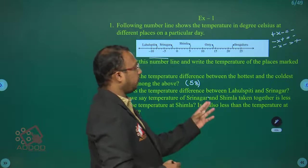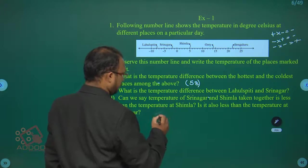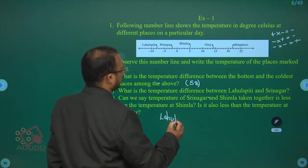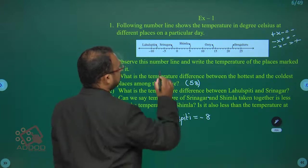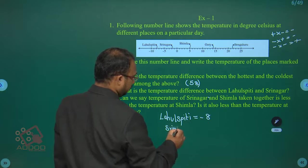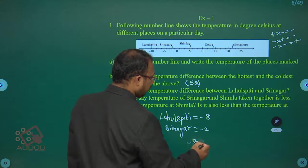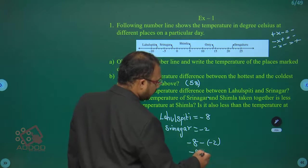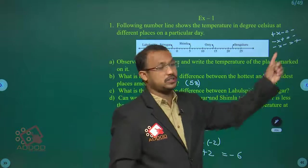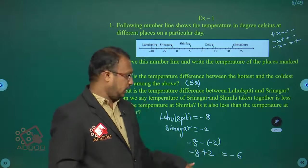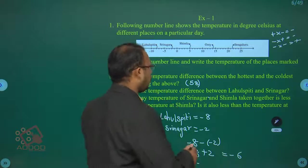What is the temperature difference between Lahulispiti and Srinagar? Difference means subtraction: minus 8 minus minus 2, which becomes minus 8 plus 2. That equals minus 6. Why minus 6? Because minus times plus gives minus, and 8 minus 2 is 6, with the sign of the larger number being minus.